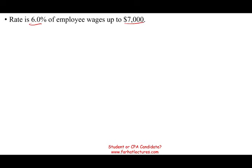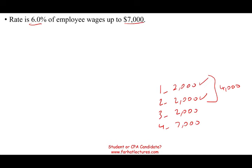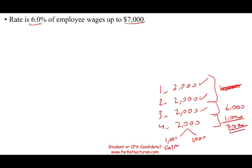For example, assume an employee is paid $2,000 a month. In January, February, and March, the employer pays FUTA on each $2,000 because the employee hasn't reached $7,000. By March, $6,000 has been paid. In April, of the $2,000 payment, only $1,000 is subject to FUTA — that brings the total to $7,000 — and the other $1,000 is FUTA-free. Any future payment to this employee for the rest of the year will not require additional FUTA payments. This is what is meant by wages up to $7,000: only the first $7,000 per employee per year is subject to FUTA.